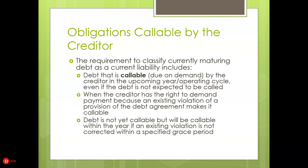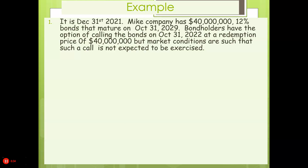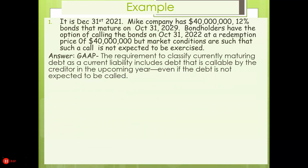These requirements say that even if you have long-term debt, you have to treat it as a current liability. For example, on December 31st, 2012, my company had $40 million in 12% bonds maturing on October 31st, 2029. The bondholder has the option of calling the bonds on October 31st at a redemption price of $40 million, but market conditions are such that such a call is not expected. The rule is you're still going to have to treat that as current — it doesn't matter if they're expected to call it. So in this case, the $40 million would be treated as a current liability.